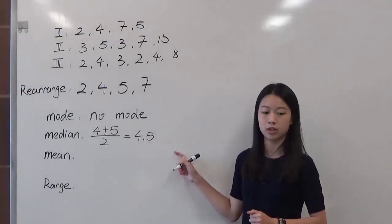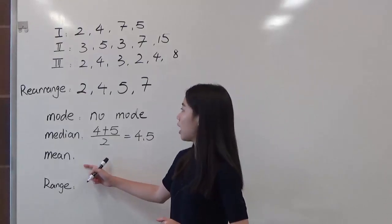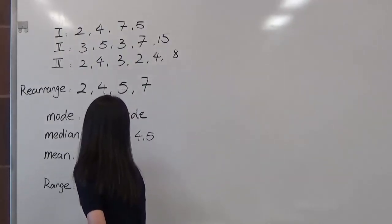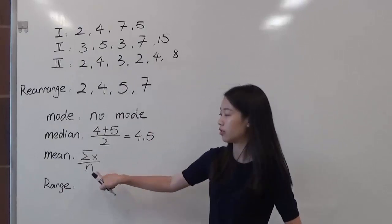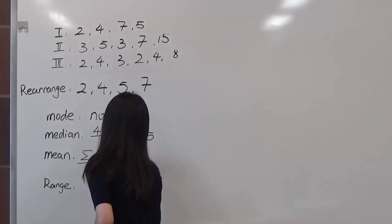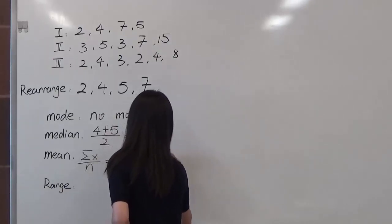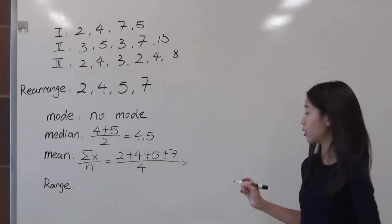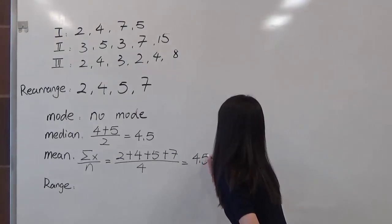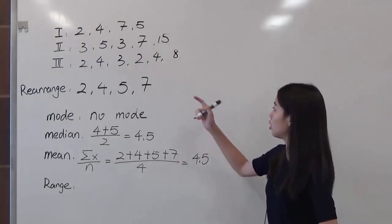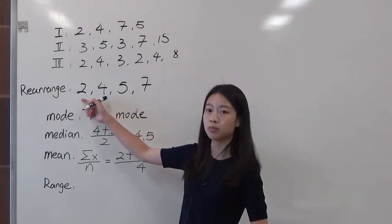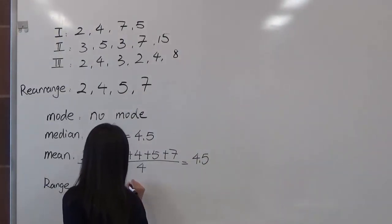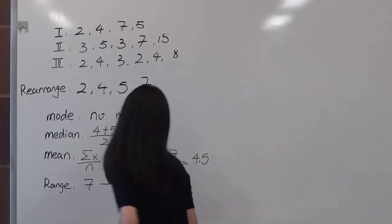So the median is 4.5 for this data set. For the mean, we have to add all the numbers up and divide by 4. The equation is: sum the values and divide by the number of data points. So we have 2 plus 4 plus 5 plus 7 divided by 4, which gives us a mean of 4.5. For the range, we use the largest number minus the smallest number: 7 minus 2 equals 5. So the range is 5.